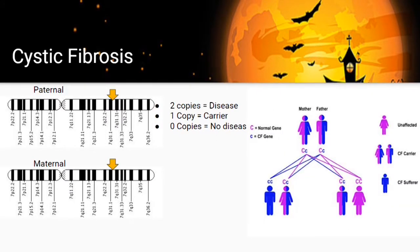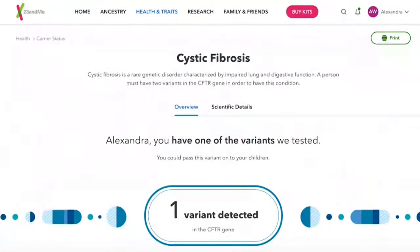To show how inheritance of cystic fibrosis can occur: if both mother and father are carriers, each having one normal and one mutant copy, they can pass any combination to their children. Some children will have zero mutations, some will be carriers like the parents, and some will have two copies and therefore have cystic fibrosis. 23andMe actually tests for the most common cystic fibrosis variant — I happen to be a carrier, so they will report if you have one of these variants.